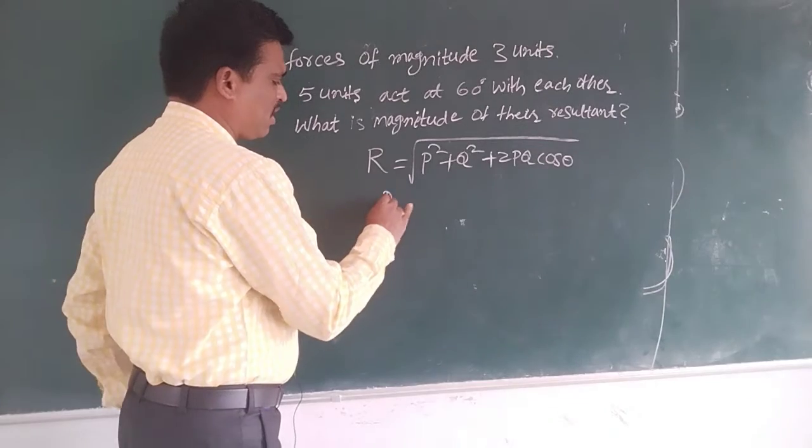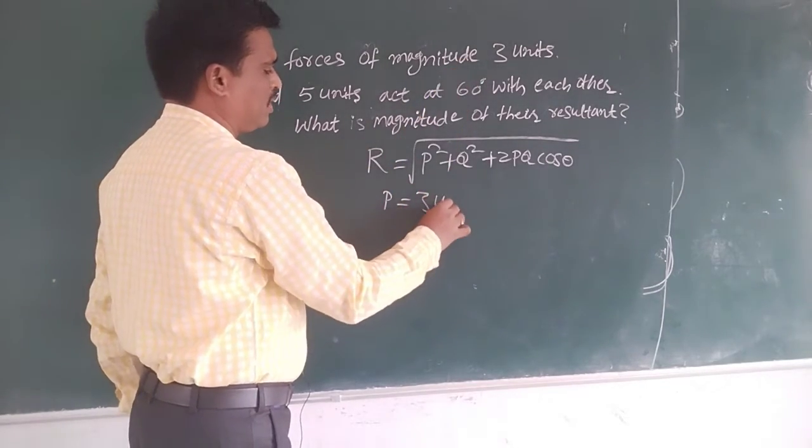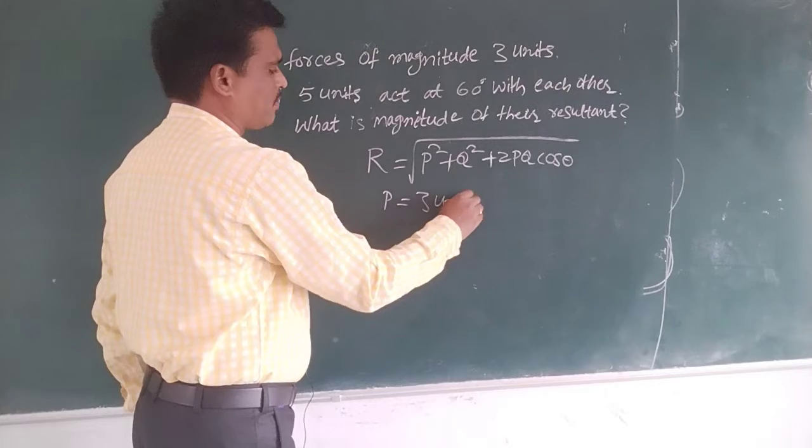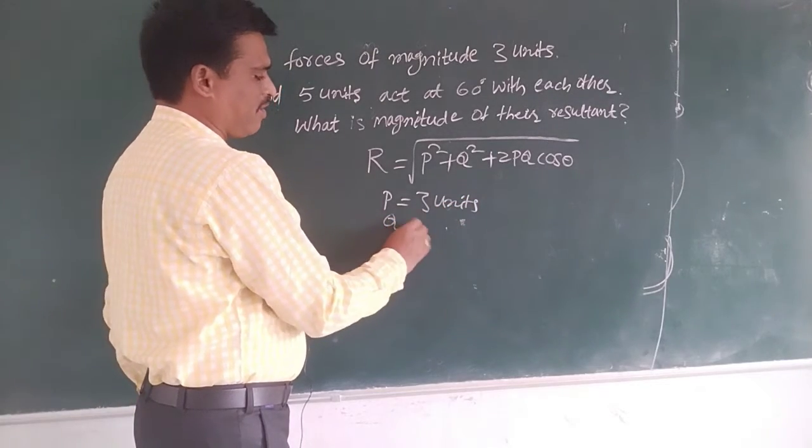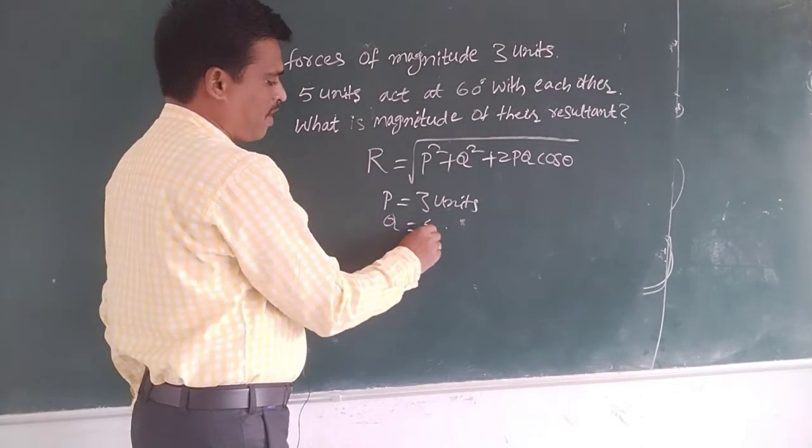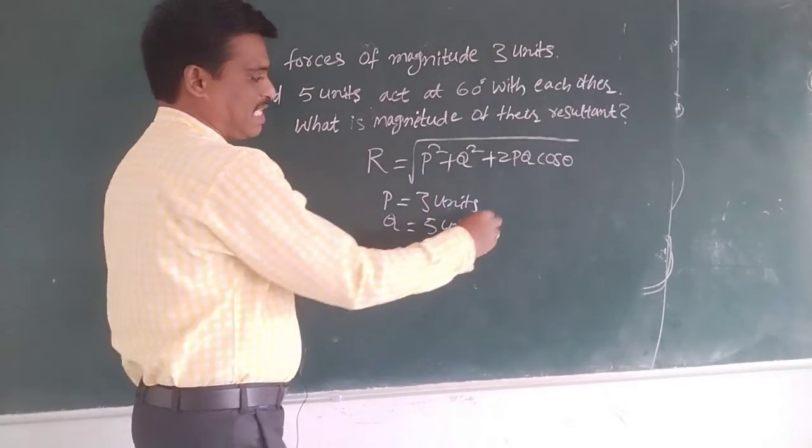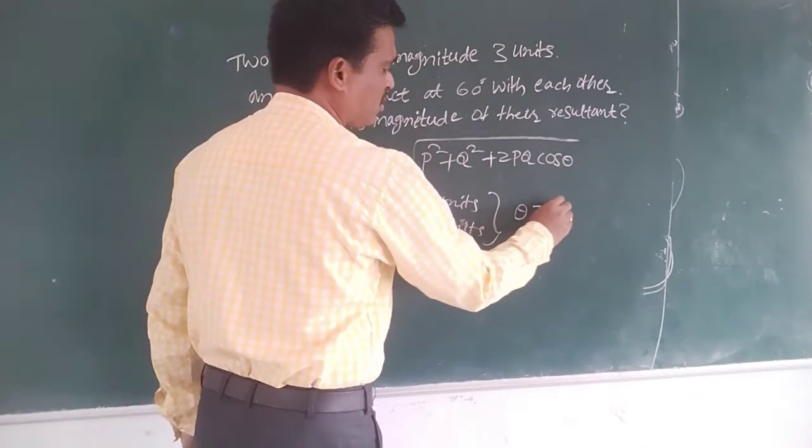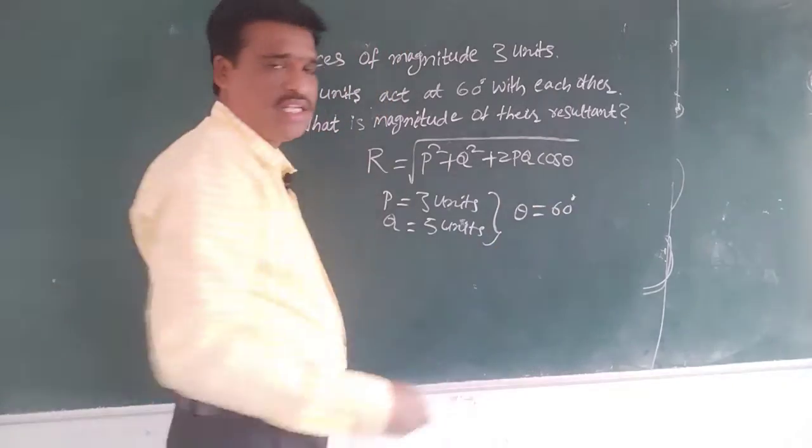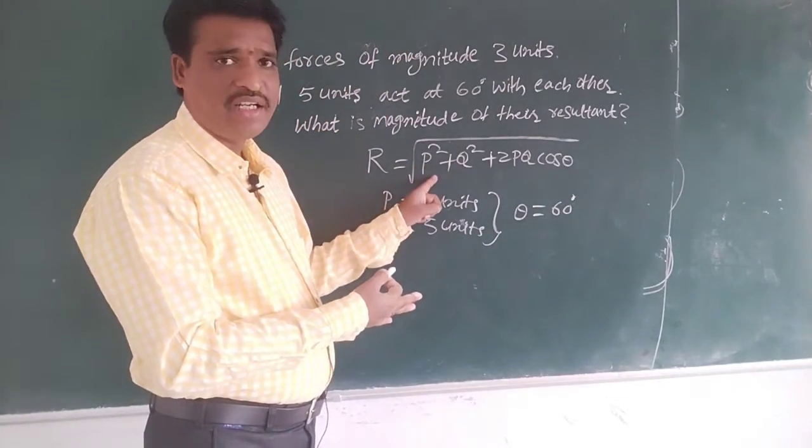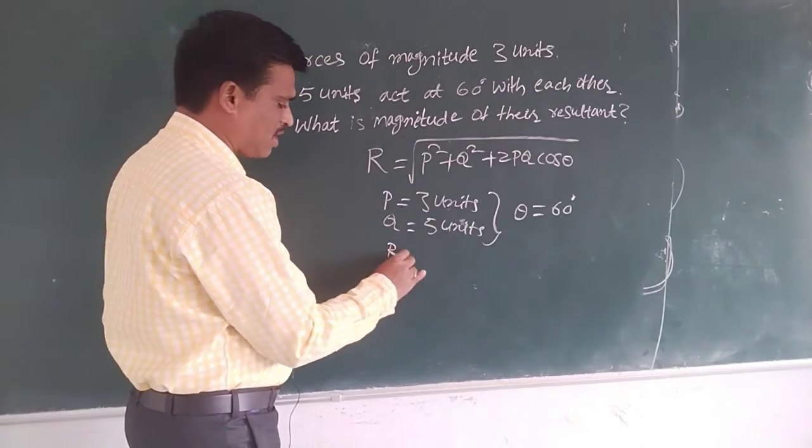So in given problem which ones are given here? P equals 3 units, and Q also given, how much? 5 units. And theta is given, how much? 60 degrees.